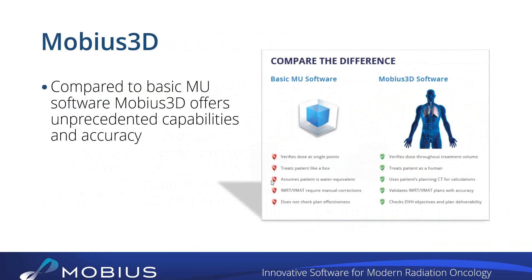Other systems assume the patient is water equivalent — of course, your patient isn't water equivalent. We use the planning CT for the calculations, so we know exactly what the different densities are in your patient. IMRT and VMAT calculations in basic MU software require manual corrections — you have to move your calc point around and add information the system doesn't have. We do a complete validation of IMRT and VMAT plans with extreme accuracy. And we check DVH objectives automatically and the plan deliverability.